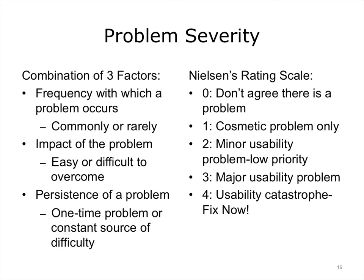The problem severity scale was developed by Nielsen for use with heuristic evaluation and is an excellent tool for any usability evaluation method. Rating the severity of problems is a very important step. Severity is a combination of three factors: the frequency with which a problem occurs, the impact of the problem, and problem persistence — does it quickly go away or is it a constant irritant? The scale ranges from a cosmetic problem to a usability catastrophe. In health information systems, the wrong display could even result in patient harm.